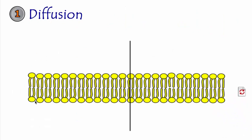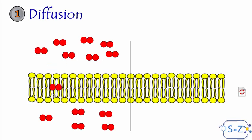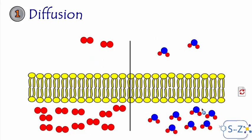Let's start with the first type of passive transport: diffusion. Here is the plasma membrane — outside the cell and inside the cell. There are oxygen molecules whose concentration outside the cell is higher than inside, because the cell has consumed the oxygen. The cell now needs more oxygen, so oxygen molecules start to diffuse from high concentration to low concentration. Oxygen molecules are small and can pass through the plasma membrane without any energy.